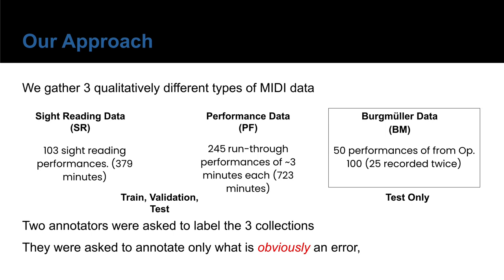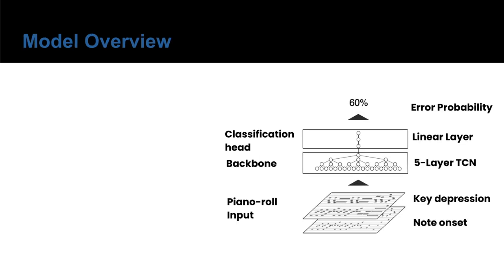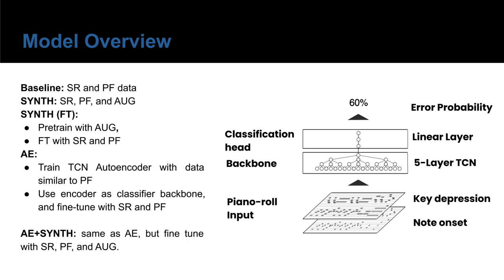We asked two annotators to label three collections for what is obviously a mistake. Our architecture is comprised of a backbone layer and a classification head, with the backbone being a five-layer TCN. We train five models, and in some of them we augment the training data. We also experiment with fine-tuning and pre-training the TCN backbone as an auto-encoder using an unannotated set.